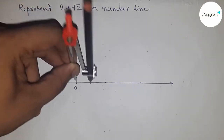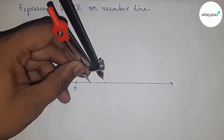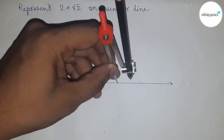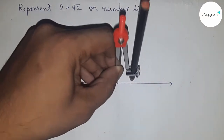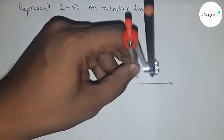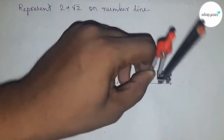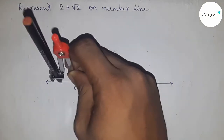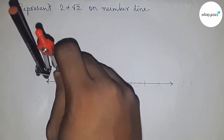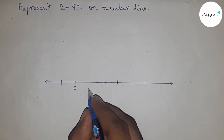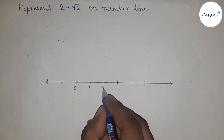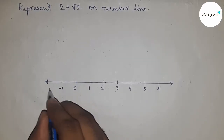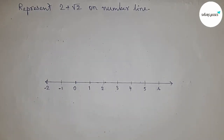I'm going to use a compass to mark all the numbers on the line, taking any length and marking the line this way. So this is one, two, three, four, five, six, and on this side minus one, minus two, and so on.